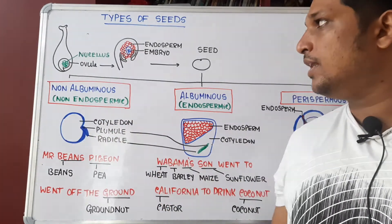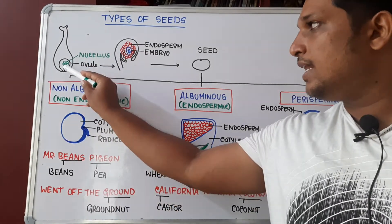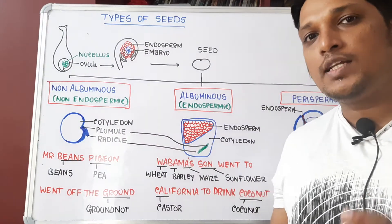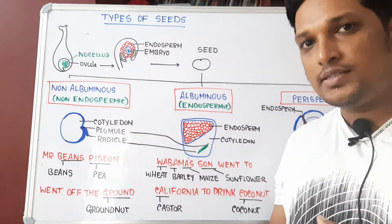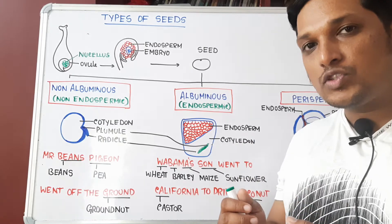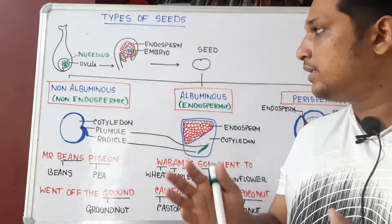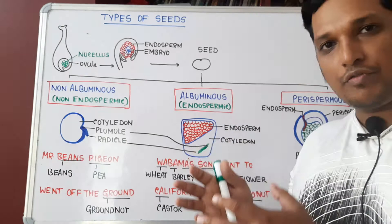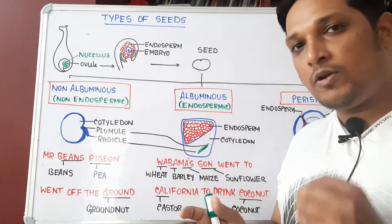The ovule contains mother cells called nucellus. One of the nucellus cells behaves like a mother cell and undergoes meiosis to form megaspores. The megaspores develop into the female gametophyte. The female gametophyte contains the egg and the polar nuclei.